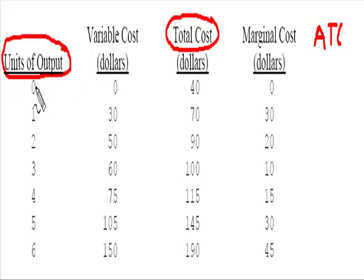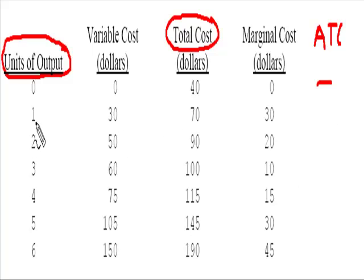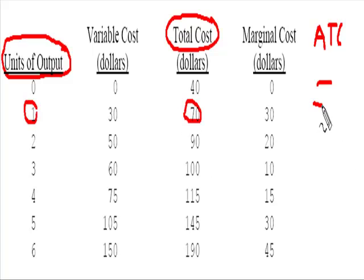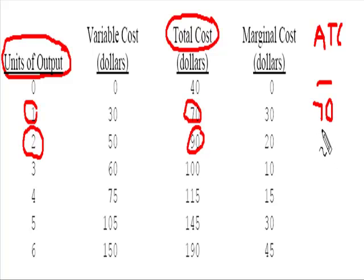For the zero level of production, there's nothing to calculate, so we'll just put a dashed line. At the first unit of production, total cost is 70, and we divide that by 1, and we get 70. So we can record that right there. And then 90 divided by 2 gets us 45.